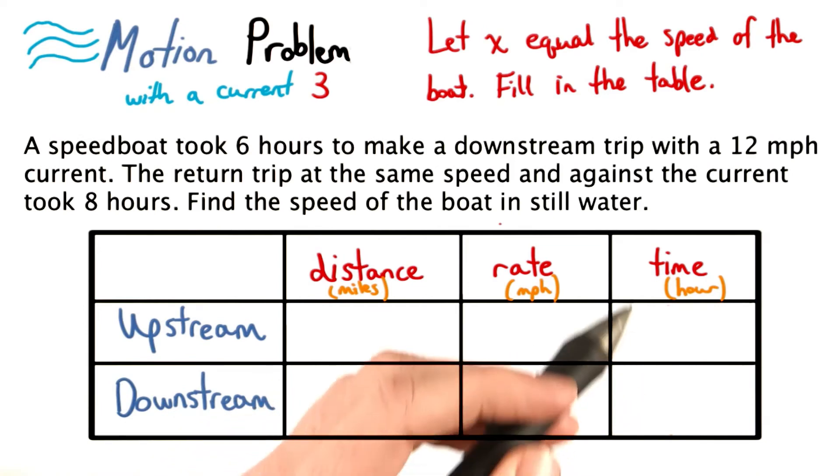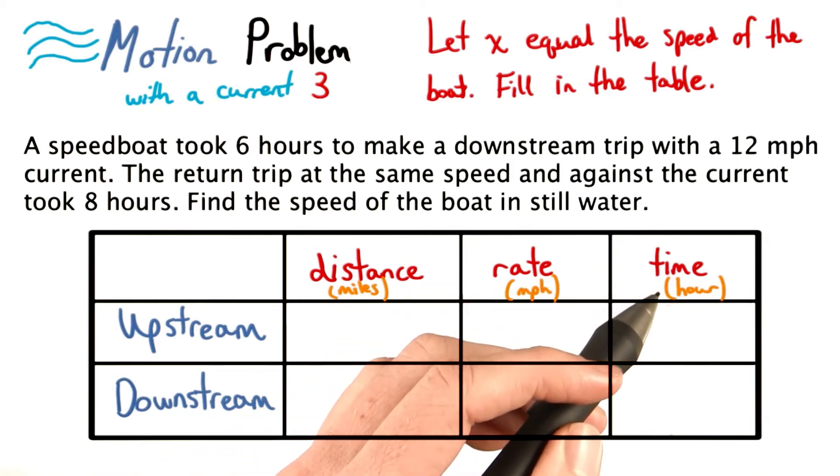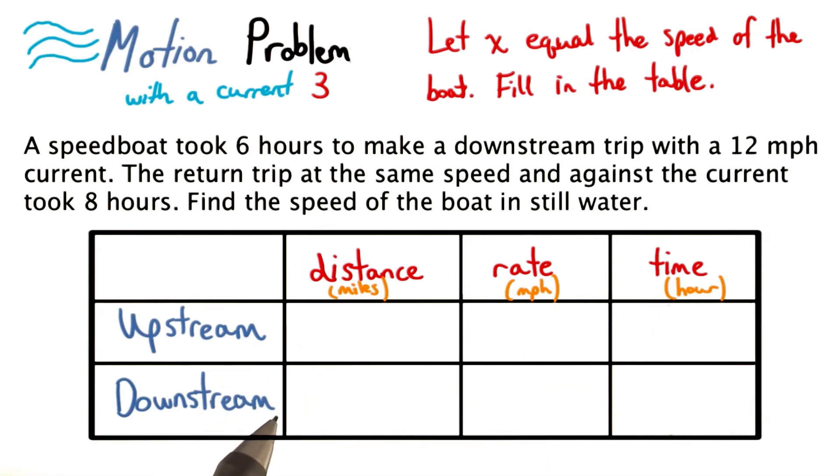And this time there is something different with our time column. We're actually given the times to go upstream and downstream. This means that we'll have numbers here, and expressions for distance here. See if you can figure this one out.